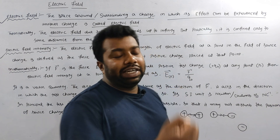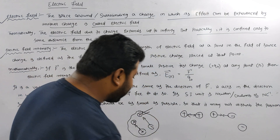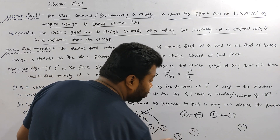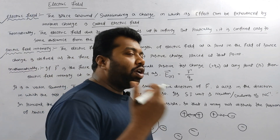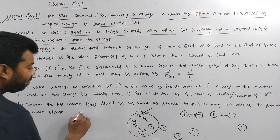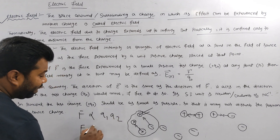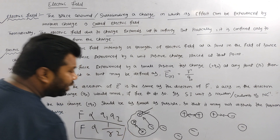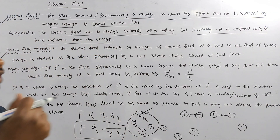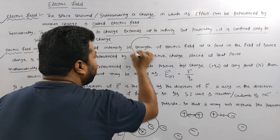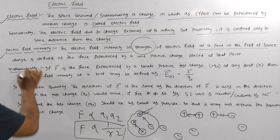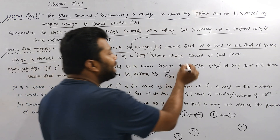Intensity means strength. The strength means that you put the charge on the charge. The two charges are directly proportional to the product of their charges. F is directly proportional to Q1 and Q2. F is inversely proportional to the distance between them. The distance will increase, the force will decrease. The electric field intensity or strength is defined as the force experienced by the unit positive charge placed at a point in the field of a source charge.